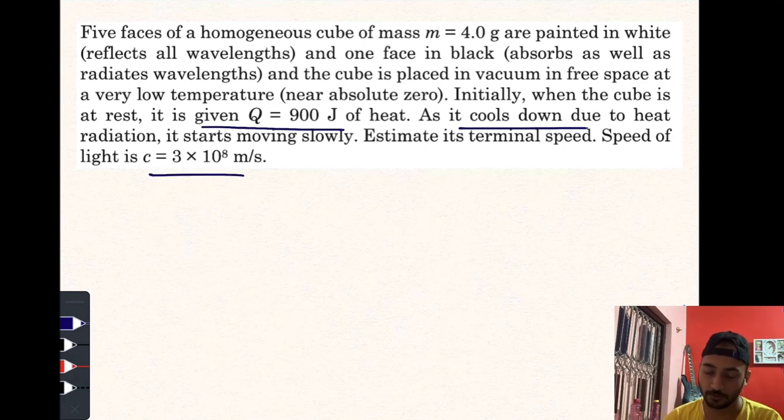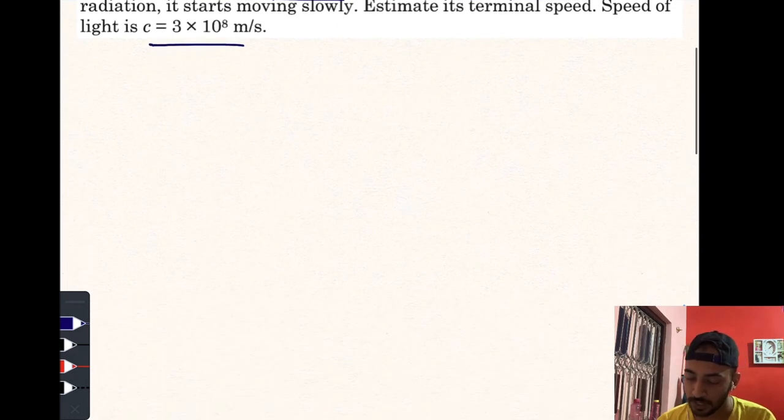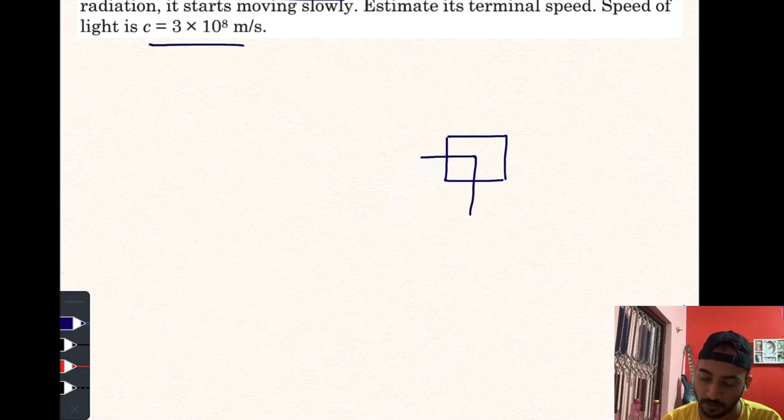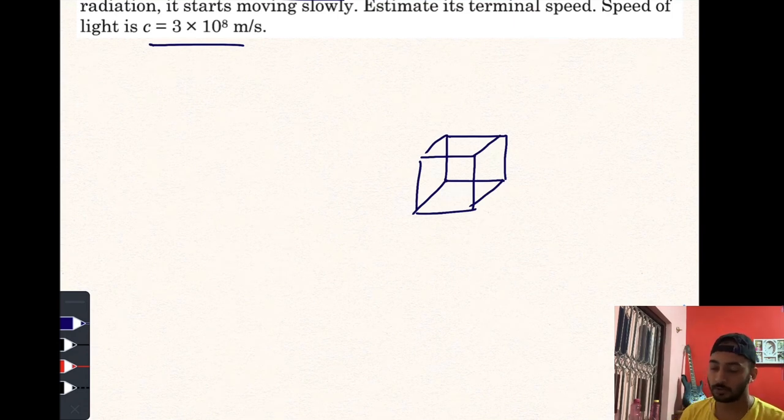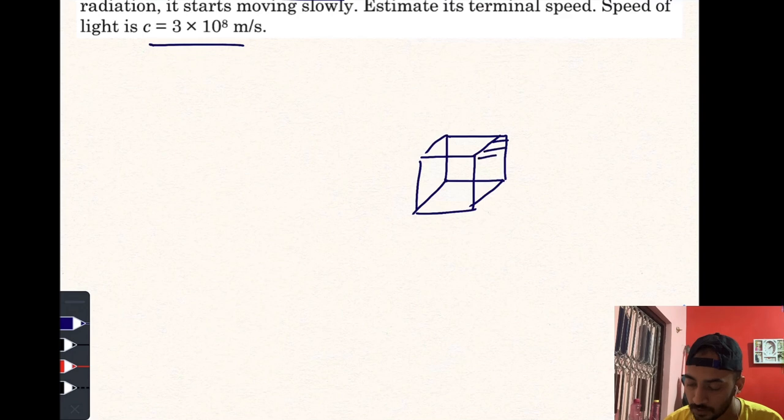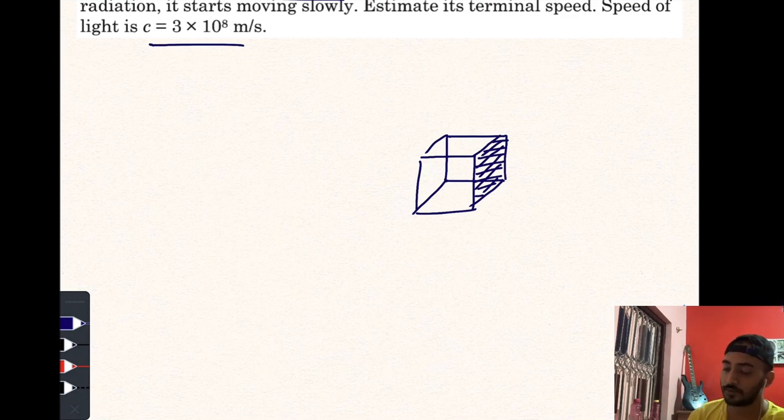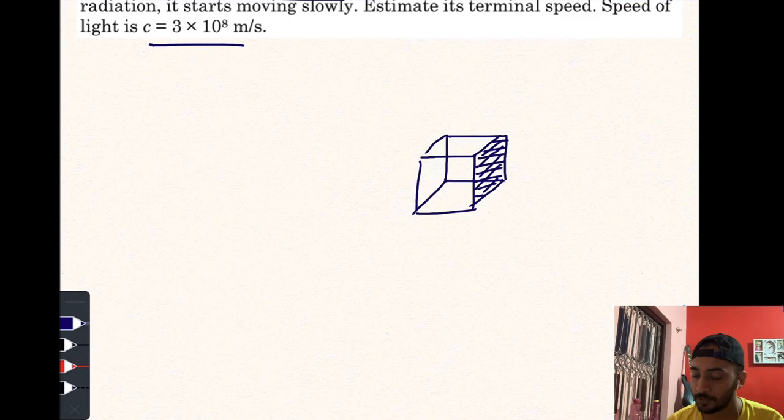So it is something like this: if we consider a cubical block or cubical body, five of its surfaces are painted white, which only reflects the light, but only one surface is totally painted black, which absorbs as well as reflects all possible wavelengths.